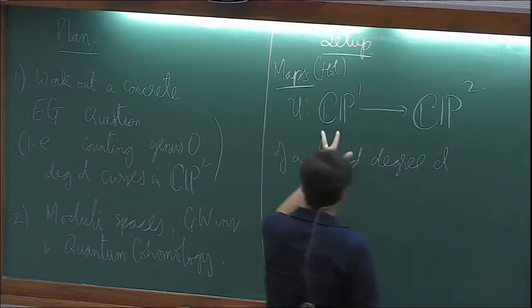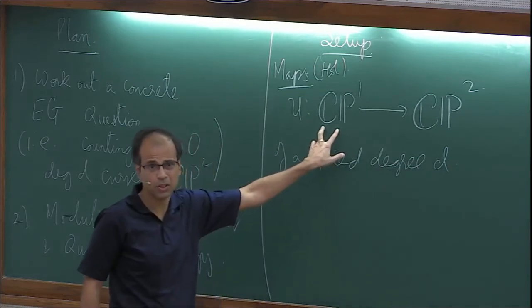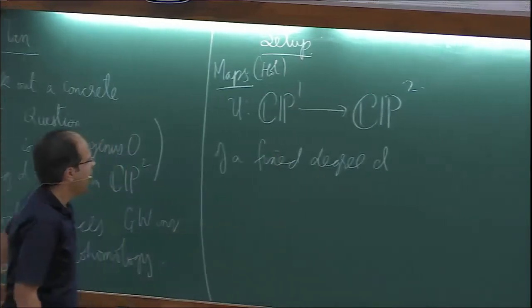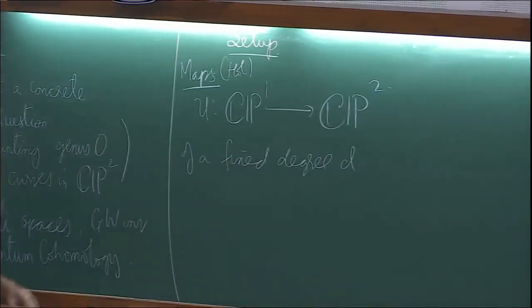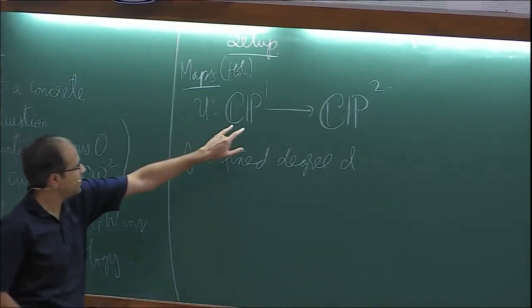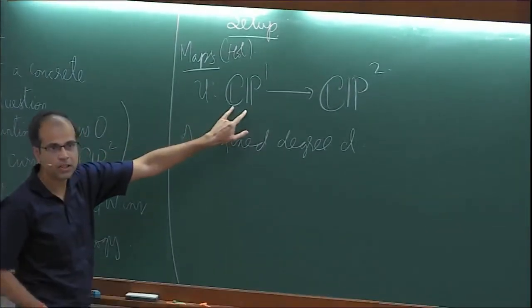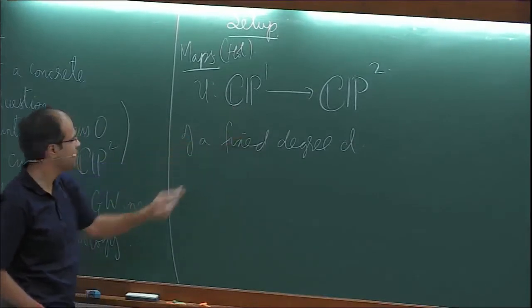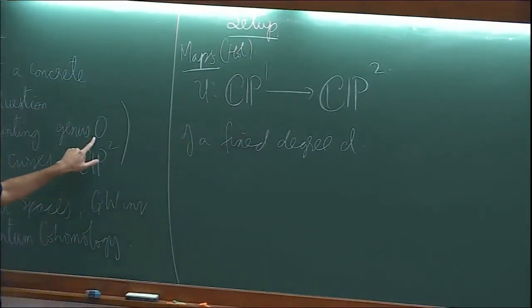CP1 is S2 topologically, and S2 is a genus 0 surface — that is why the name genus 0.